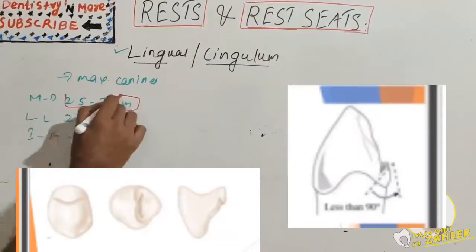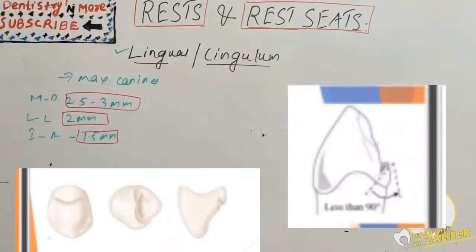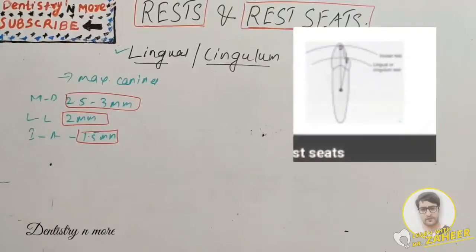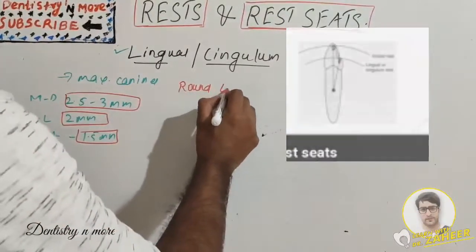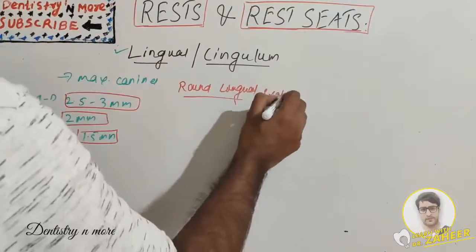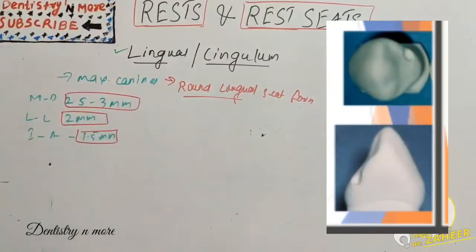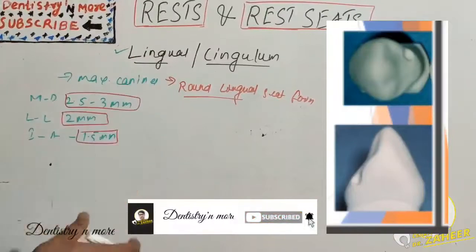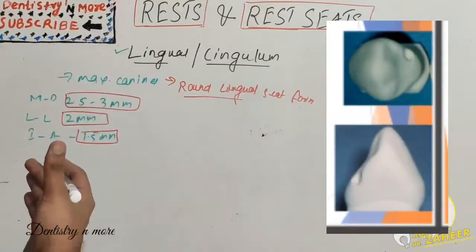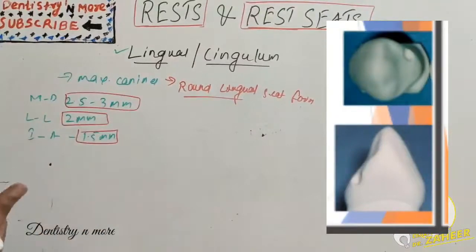The lingual rest is located closer to the rotational center of the supporting tooth and does not tend to tip the tooth. Sometimes a round lingual seat form is needed on the mesial of canine teeth when the typical cingulum rest is contraindicated due to a large restoration, lack of clearance with opposing teeth, or a poor cingulum. This round lingual seat form is spoon-shaped, similar to an occlusal rest seat, but is more difficult to prepare due to the incline of the lingual surface.